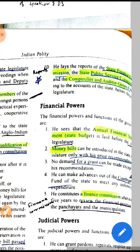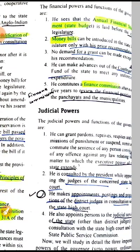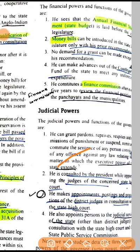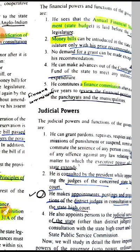Regarding financial powers: no grant can be made except on his recommendation, and money bills can only be introduced with his prior recommendation. He also constitutes the Finance Commission. Regarding judicial powers: he can grant pardon, reprieve, or suspend punishment for offenses under state law. He also consults with the President for approving judges of the concerned High Court, and members of judicial services are appointed by him.